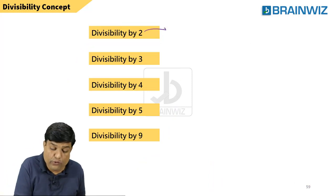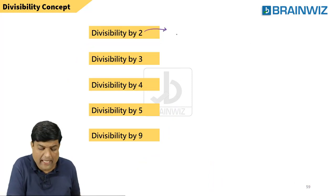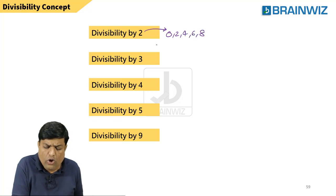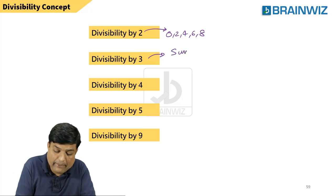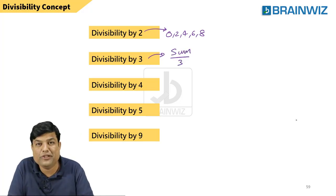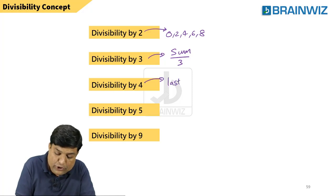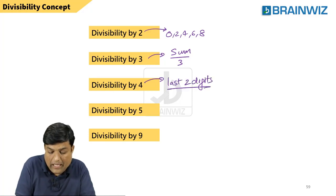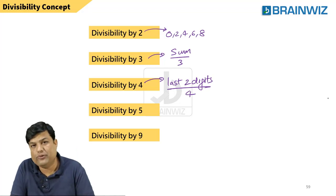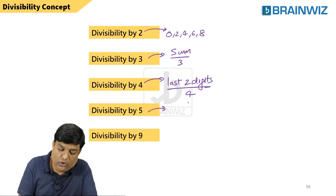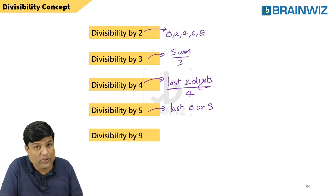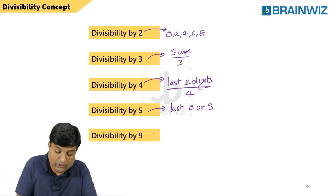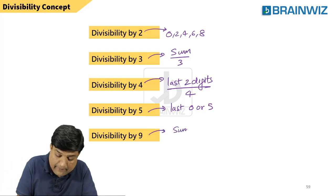What is divisibility of 2? The last digit must be either 0, 2, 4, 6, or 8. And for divisibility of 3, remember that the sum of the digits must be divisible by 3. For divisibility of 4, the last 2 digits must be divisible by 4. And for divisibility of 5, the last digit must be either 0 or 5.